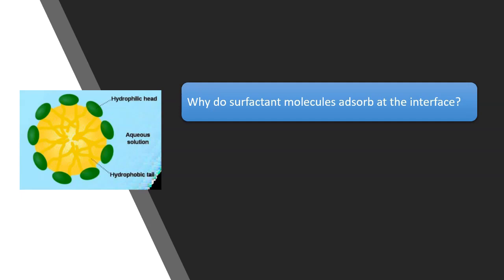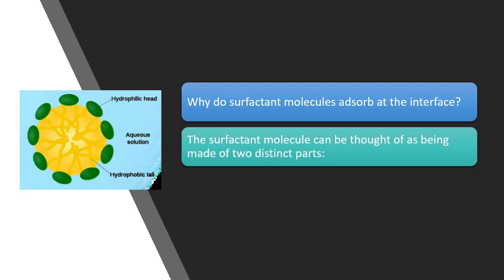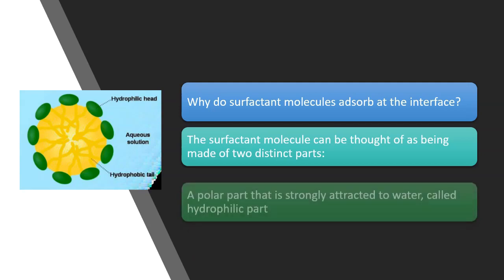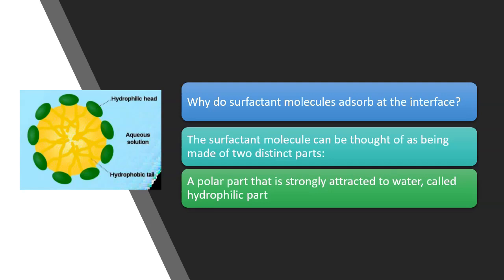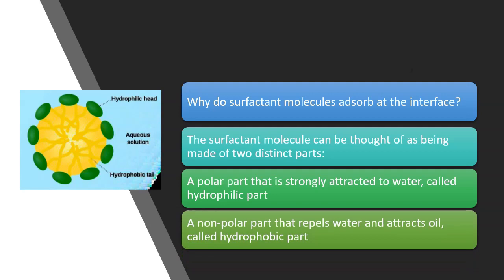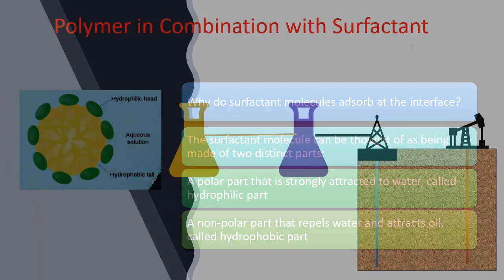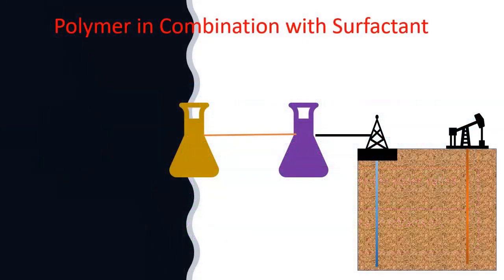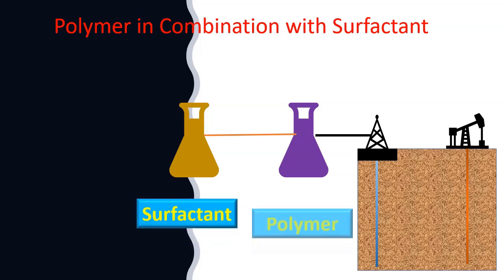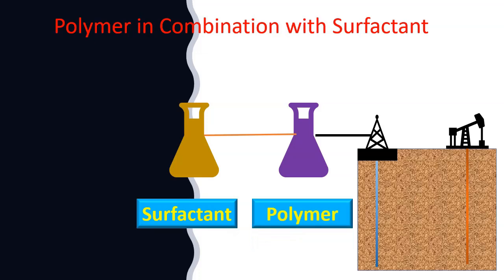The surfactant molecule can be thought of as being made of two distinct parts: a polar part that is strongly attracted to water, called the hydrophilic part, and a non-polar part that repels water and attracts oil, called the hydrophobic part. In practice, there are many different combinations used in the industry, and in some cases polymer is used along with surfactant. The EOR process of polymer flooding is explained in another video, so please do have a look.